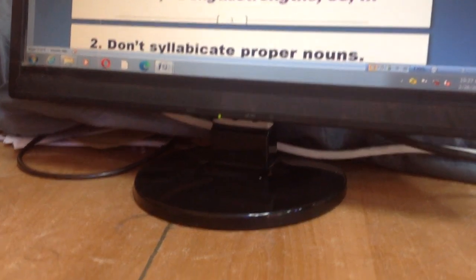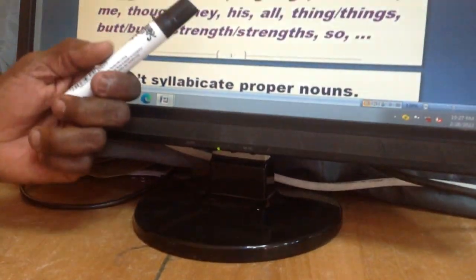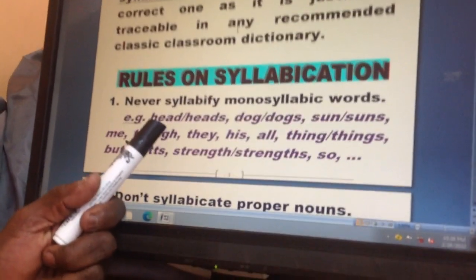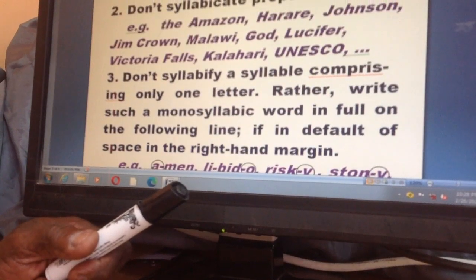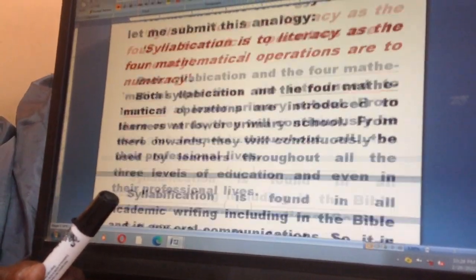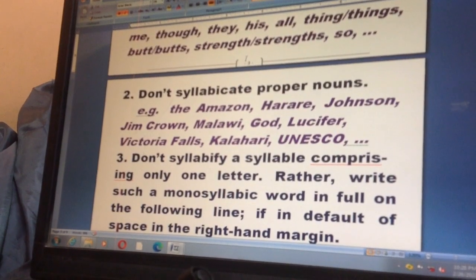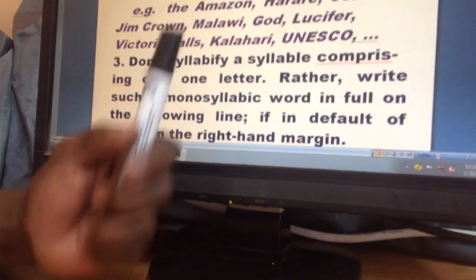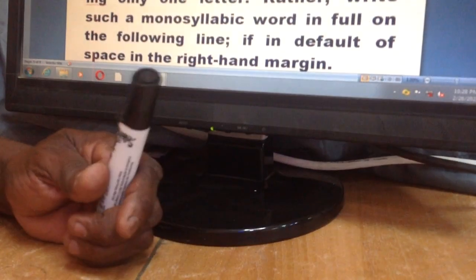We have a few rules to learn by heart on how to syllabify. Rule number one: never syllabify or syllabicate a monosyllabic word. If a word comprises only one syllable, like 'head' or 'heads,' you cannot syllabify it. Rule number two: don't syllabicate proper nouns. Grammar, the final authority on language, forbids that we syllabicate proper nouns. If you come across them in an exam situation, you will lose marks.